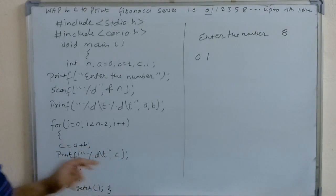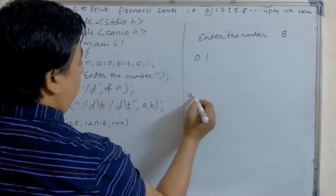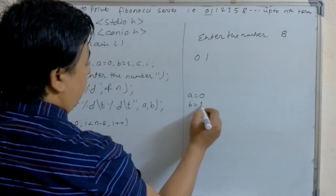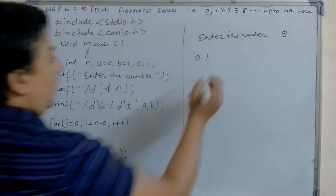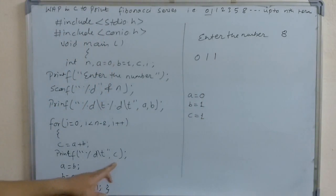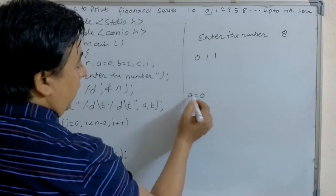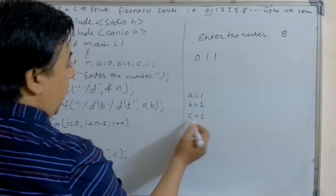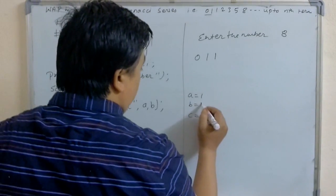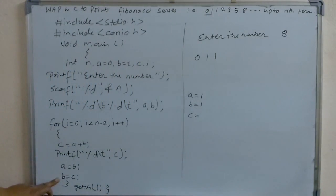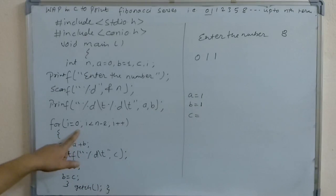Then the loop begins: i equal to 0, and 0 is less than n minus 2, which is 8 minus 2 equals 6 — that is true. So it enters the loop: c is equal to a plus b, where a is 0 and b is 1, so 0 plus 1 equals 1, stored in c. It prints c, which is 1. Then a is equal to b — the value of b (1) is stored in a — and b is equal to c, so b also becomes 1. Then i increments to 1, and 1 is less than 6, which is true.